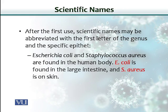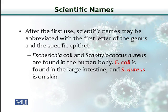After the first use, scientific names may be abbreviated with the first letter of the genus and the specific epithet. For example, we first write it in full: Escherichia coli and Staphylococcus aureus are found in the human body. But if we refer to them a second time, we can abbreviate: E. coli is found in the large intestine, and S. aureus is found on skin.